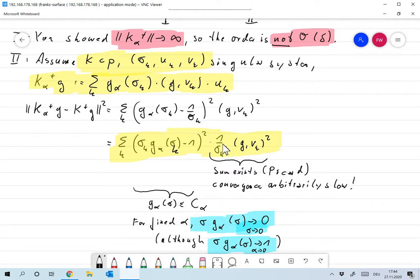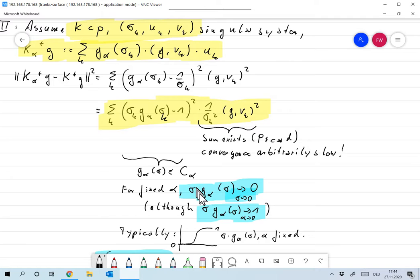Now, if that converges arbitrarily slow, maybe that sigma K times G alpha of sigma K minus one squared makes that convergence a little bit better. No, it doesn't, because we have G alpha of sigma is bounded above by C alpha. So if you fix alpha, then that means that sigma times G alpha of sigma goes to zero for sigma to zero. So that sigma times G alpha of sigma, sigma K times G alpha of sigma K is small, is almost zero when sigma is, when sigma K is small or when K is large. So from some point onwards, all these values over here are larger than one half. And so that for fixed alpha, it doesn't even go to zero. So that also doesn't help the convergence. The convergence really is here in the convergence of the Picard sum.